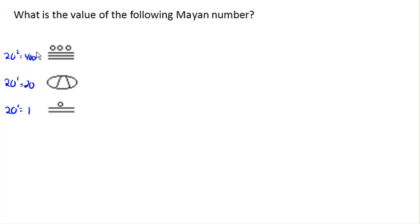So here we have, remember, each bar is 5, each dot is 1, so 5, 10, 11. So we've got 11 ones.